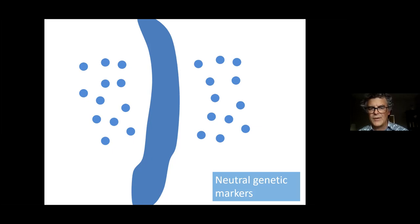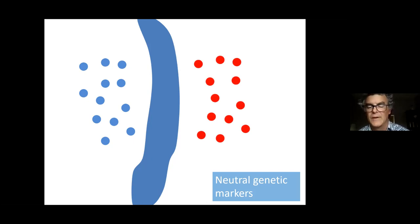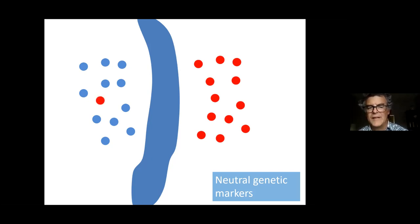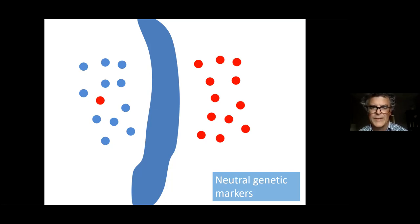That's essentially what we're doing — measuring genetic drift. One brave individual crosses the river, and we can measure genetically that this individual has dispersed away from their ancestors. That's the concept of genetic drift I'll be presenting with in the following results.